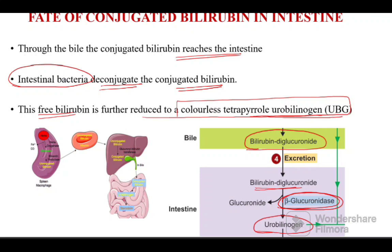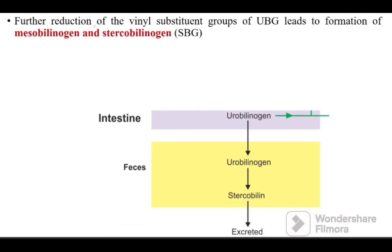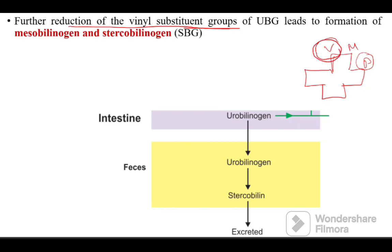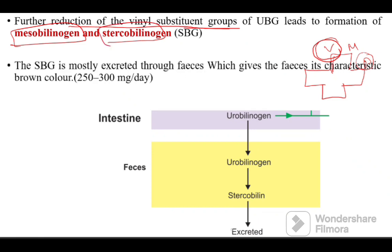The free bilirubin is further reduced to a colorless tetrapyrrole compound called urobilinogen. The pyrrole ring present in heme has many substituents including vinyl, methyl, and propionyl groups. When the vinyl substituent undergoes reduction, it leads to the formation of mesobilinogen and stercobilinogen. Stercobilinogen is excreted through feces and gives feces its characteristic brown color, with about 250 to 300 milligrams per day being formed and excreted.